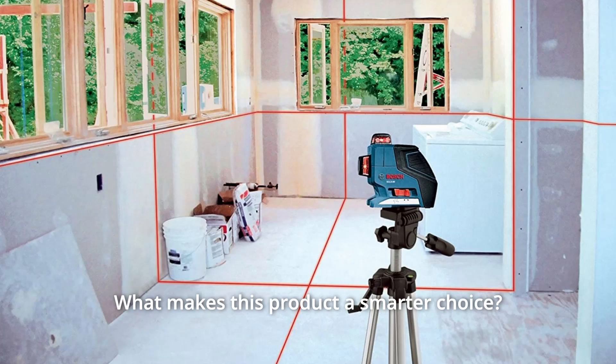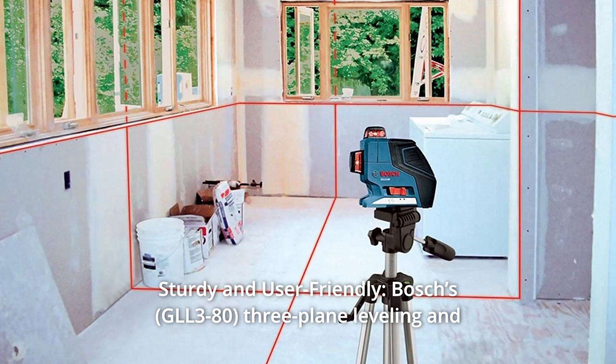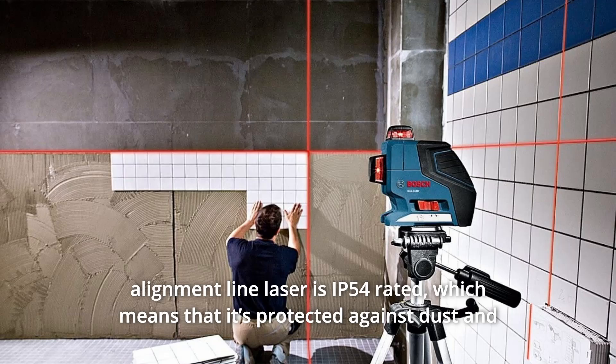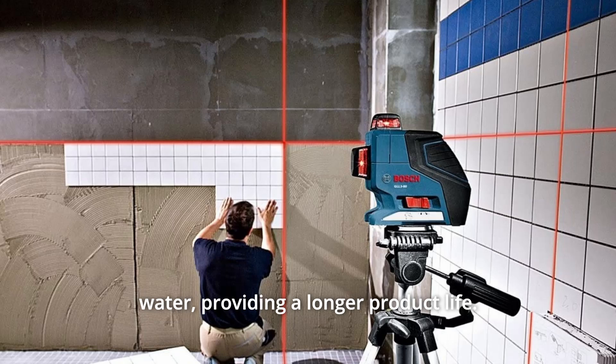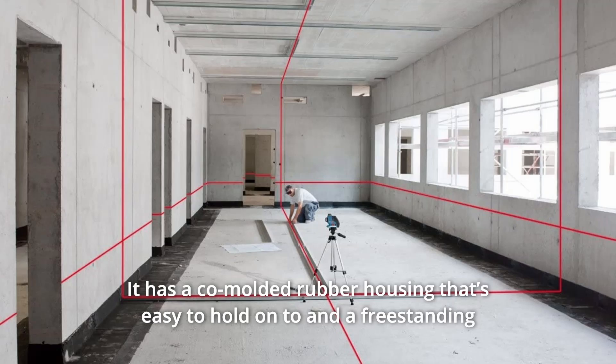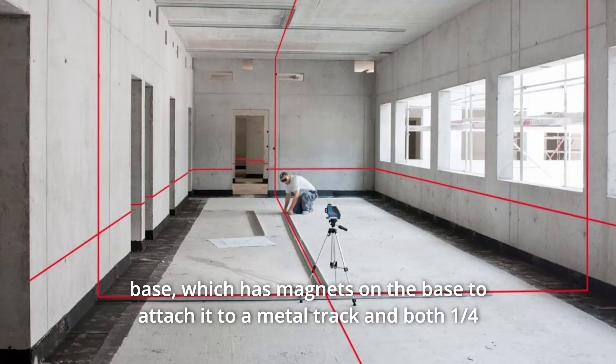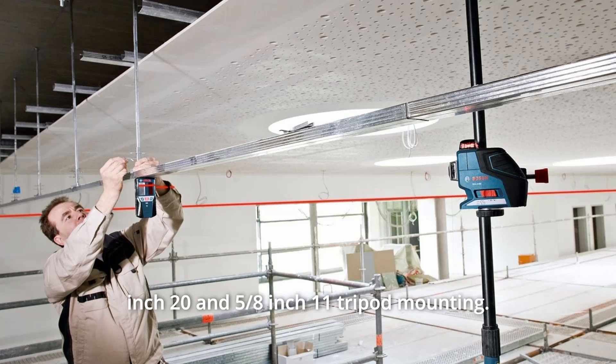What makes this product a smarter choice? Number 1: Sturdy and user-friendly. Bosch's three-plane leveling and alignment line laser is IP54 rated, which means that it's protected against dust and water, providing a longer product life. It has a co-molded rubber housing that's easy to hold onto in a freestanding base, which has magnets on the base to attach it to a metal track in both a quarter of an inch 20 and five-eighths of an inch 11 tripod mounting.